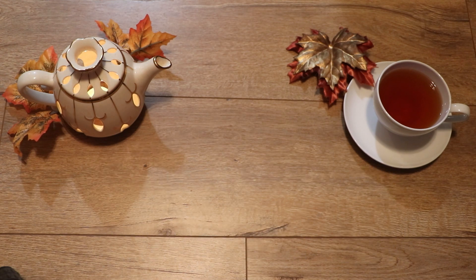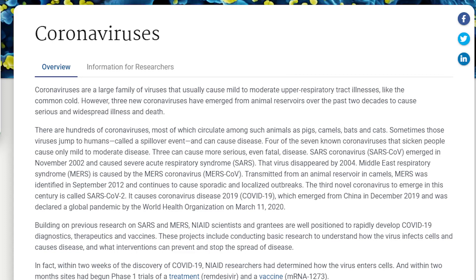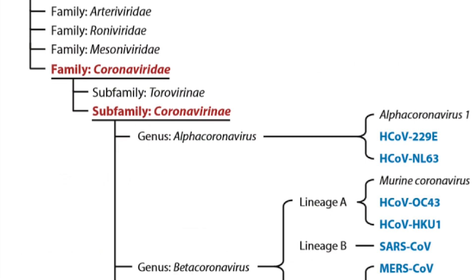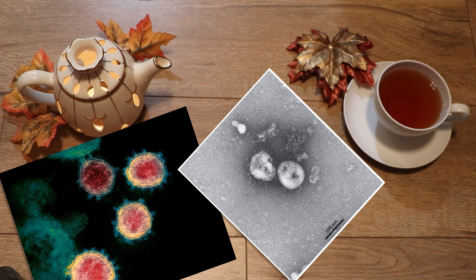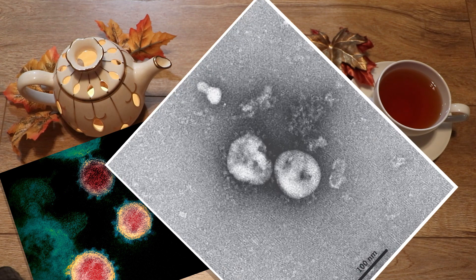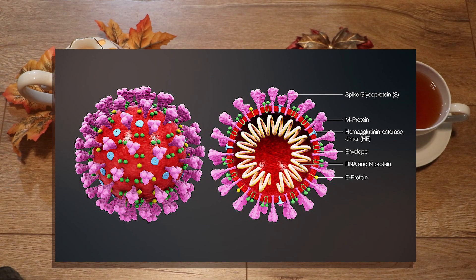First I want to talk about the two names we've been using interchangeably as a society: coronavirus and COVID-19. Coronavirus refers to a type of virus — in the same way that influenza virus refers to a virus family, neither of these are referring to a specific strain. Coronaviruses derive their name from the fact that, under electron microscopic examination, each viron is surrounded by a corona, or halo, due to the presence of viral spike peplomers emanating from each proteinaceous envelope. See all those little spiky things? That's the corona.